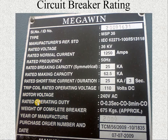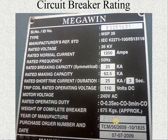The circuit breaker operating duty cycle is O, 0.3 seconds CO, 3 minutes CO. The weight of the complete breaker is 675 kg and the year of manufacture is 2009. Every circuit breaker consists of these parameters along with purchase order number, date and some specific identifying details.